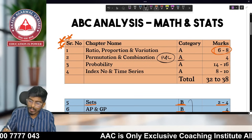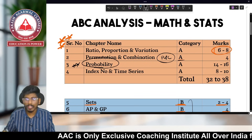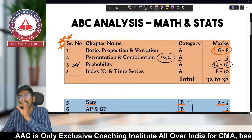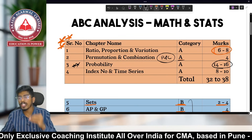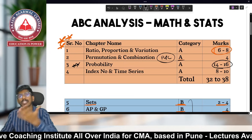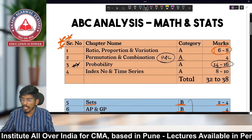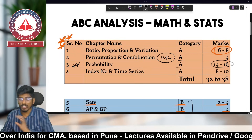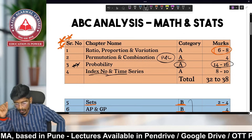Probability is a very important Category A chapter from Statistics, asked for 14 to 16 marks. It is easily understandable and easily scorable since most students have studied it in Class 10, 11, and 12. Being an easy and high-weightage chapter, Probability is firmly in Category A.